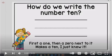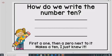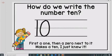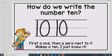Okay, let's learn how to write the number ten. And how do we write the number ten? First a one, then a zero next to it — makes a ten, I just knew it. Let's try that again: first a one, then a zero next to it — makes a ten, I just knew it.